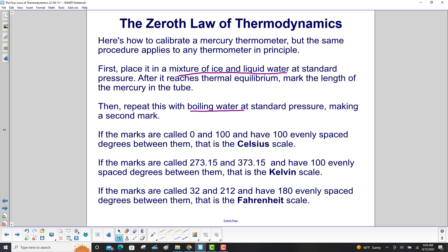If we call those marks 0 for the ice and liquid water, and 100 for boiling water, and have 100 evenly spaced degrees between them, that's the Celsius scale. If the marks are called 273.15 and 373.15 with 100 evenly spaced degrees between them, that's the Kelvin scale.